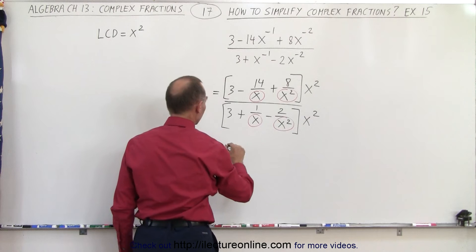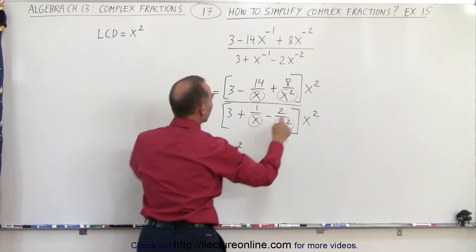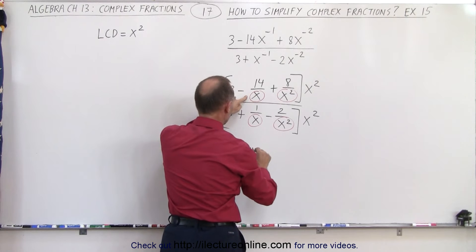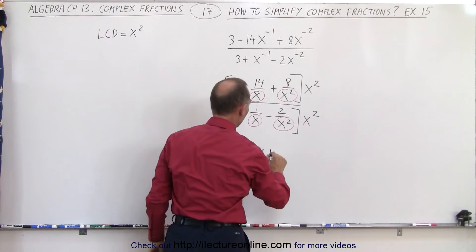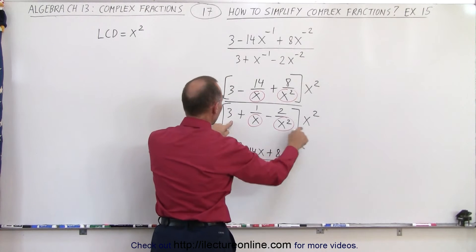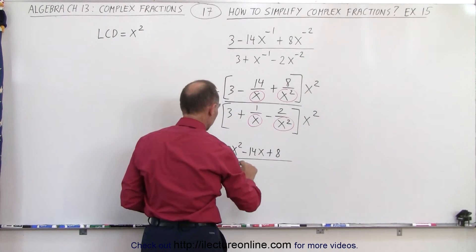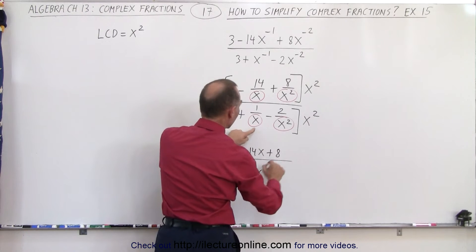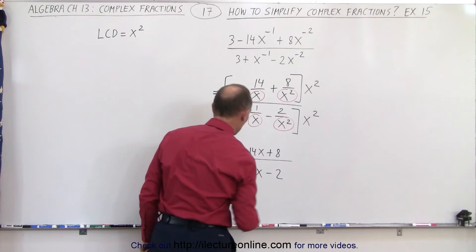3 times x squared is 3x squared. Here notice that x squared divided by x is x, so we get minus 14x. And here the x squares cancel, we get plus 8. In the denominator, we get 3x squared. Here x squared divided by x is x, so we get plus x. And here the x squares cancel, minus 2.